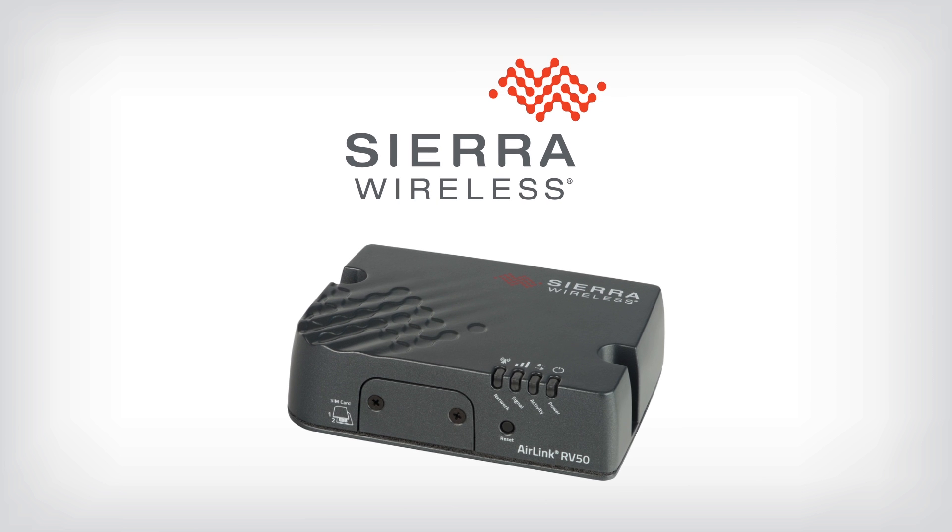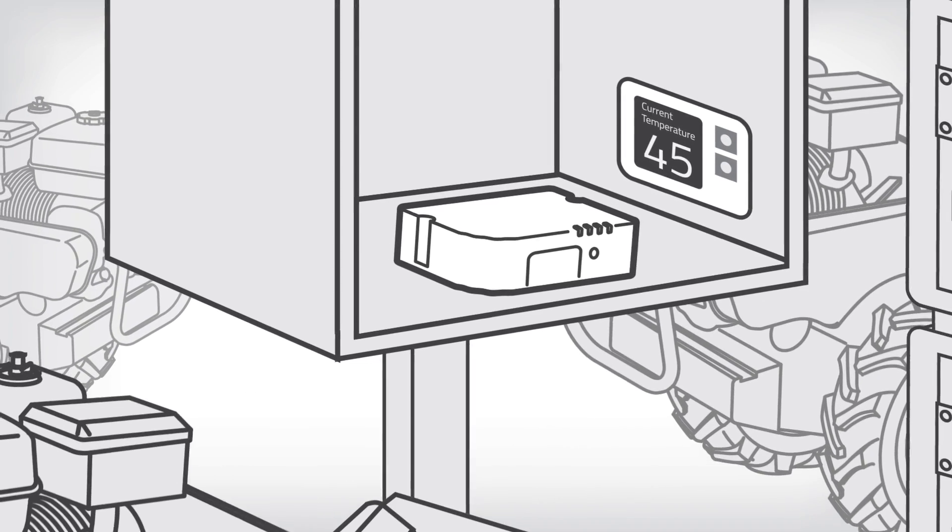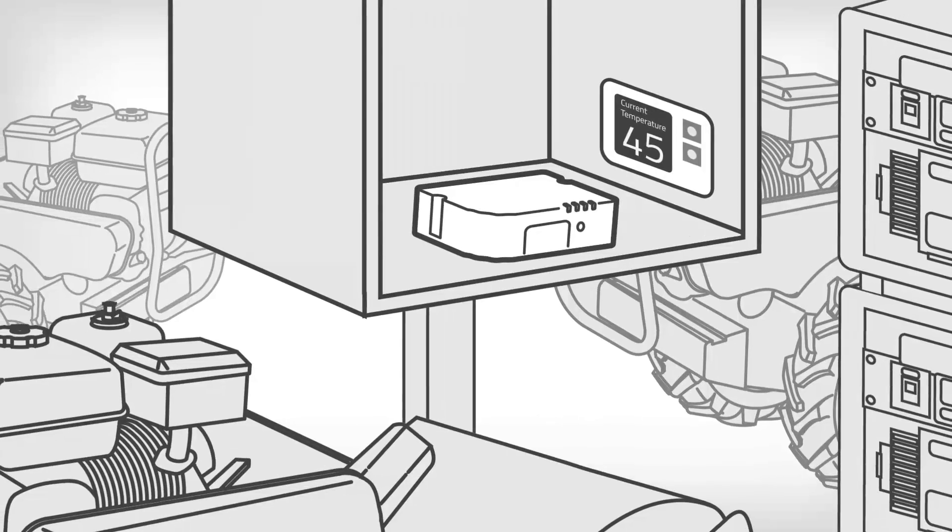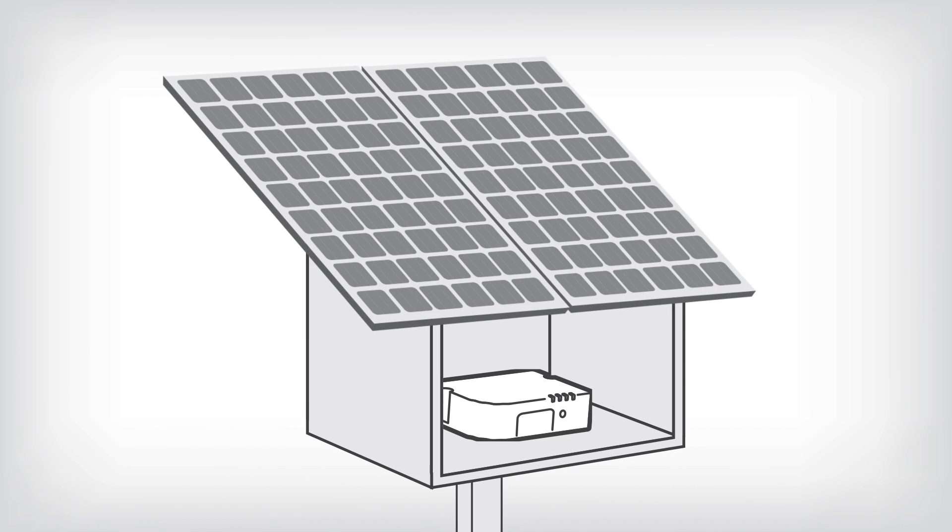Introducing the AirLink Raven RV50 Industrial LTE Gateway. From the market leader in cellular gateways, Sierra Wireless, the Raven RV50 is industrial-grade, specifically designed for operations in challenging and hazardous environments. It is easy to install and is optimized for solar applications.